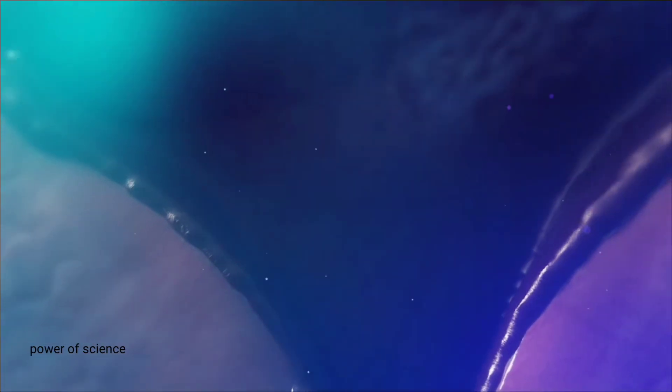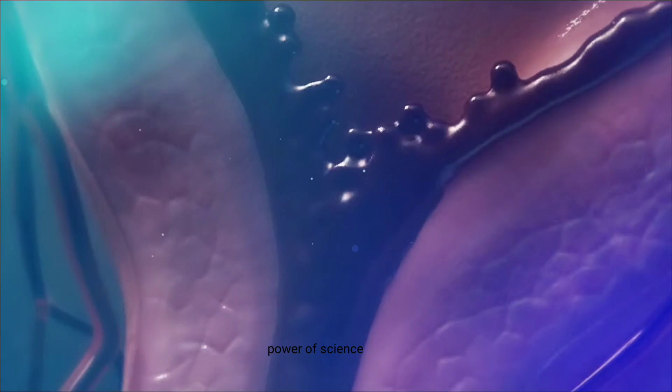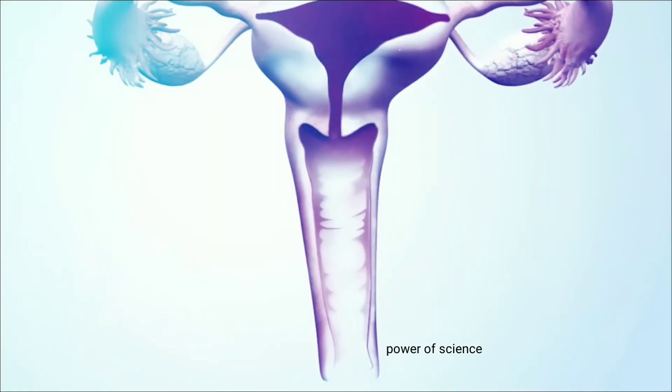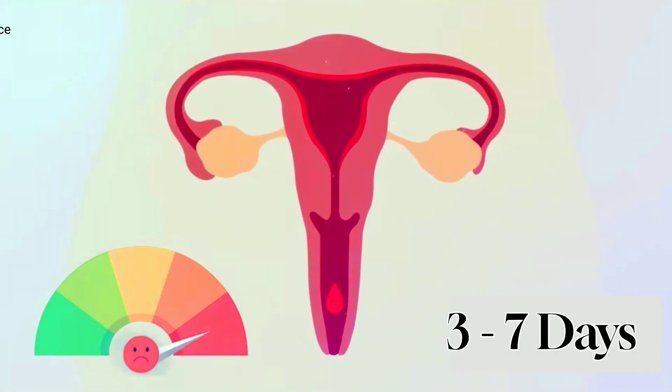In this phase, the cells of the inner lining of the female uterus, called the endometrium, break down and start to shed, which leaks out from the vagina in the form of blood. This typically lasts for about three to seven days.